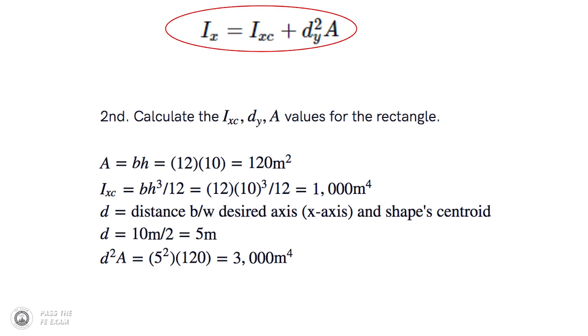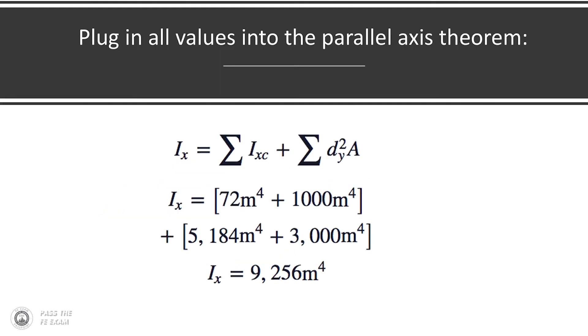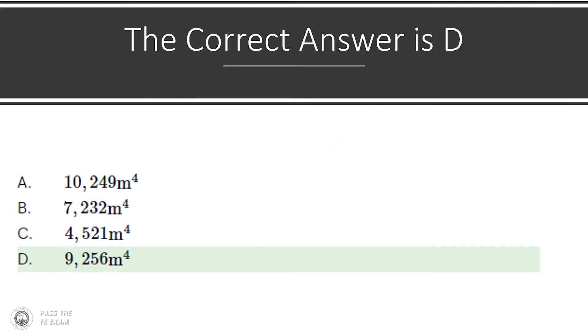Now once you solved these terms for both the triangle and the rectangle you're going to plug in all of these values into the parallel axis theorem which you can see here on the screen. And again remember the way that you're going to solve this problem is you have to determine that you're going to have to cut this shape up into two smaller shapes. If you do that you'll be able to solve this relatively easily and you'll determine your answer which you see on the bottom of the screen 9256 which was answer number D.